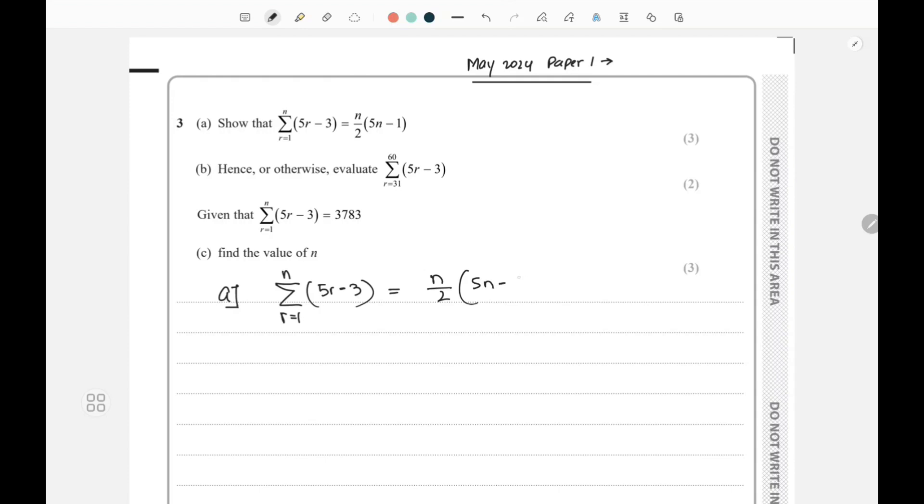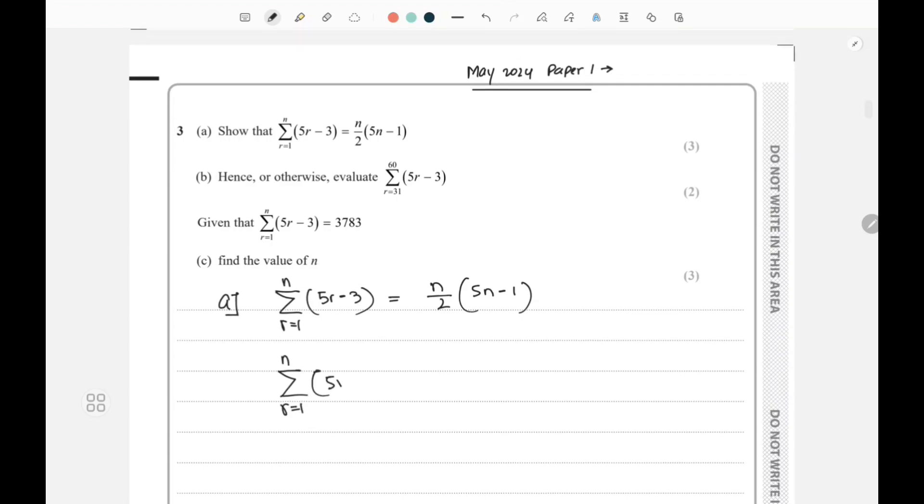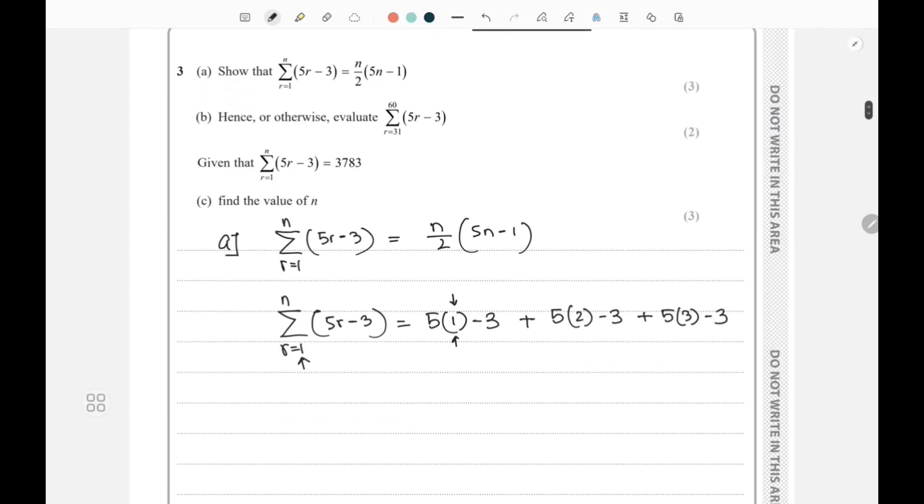With sigma notation, if I start putting in values, it actually starts with 5 into 1, so r equals 1 first, which is 5(1) - 3, then plus 5 times 2 minus 3, plus 5 times 3 minus 3, and it goes on and on.